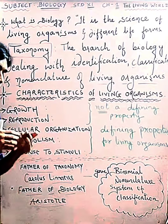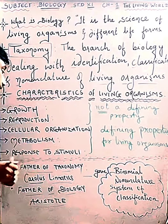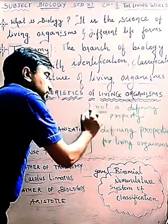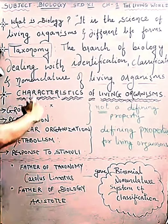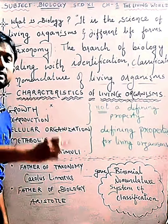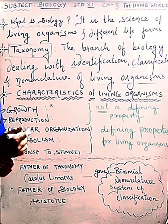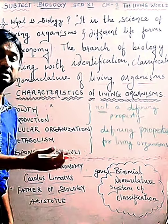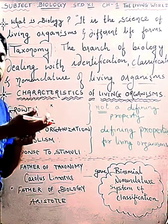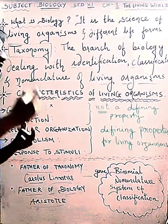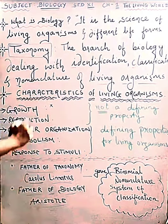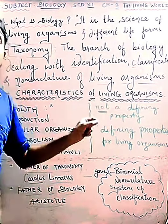Growth is one of the characteristics of living organisms, but it is not a defining property. Even a non-living thing can also grow. For example, Mount Everest's height was 8848 meters previously and now it is 8850 meters due to accumulation processes. So growth alone cannot define a living organism — growth is not a defining property.